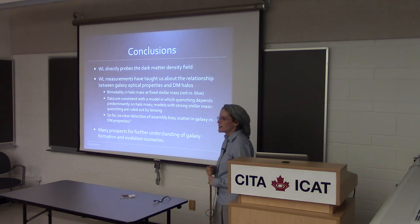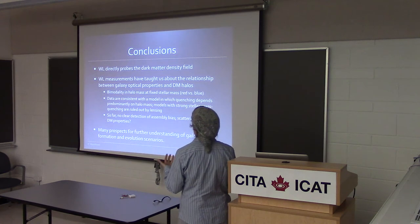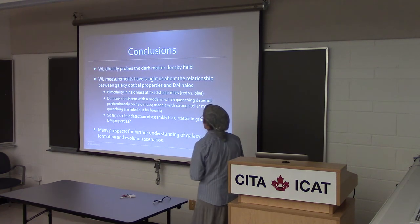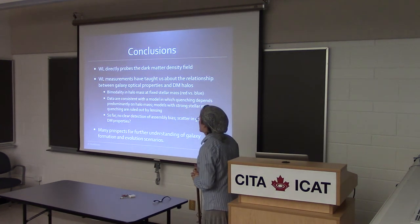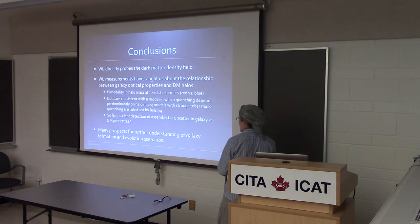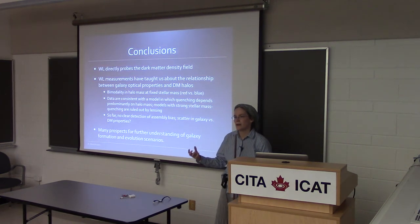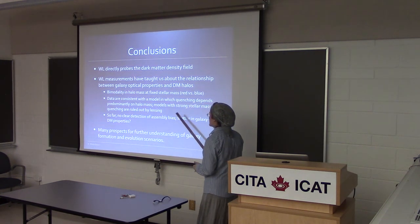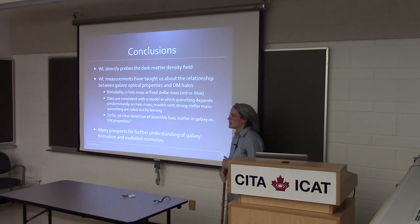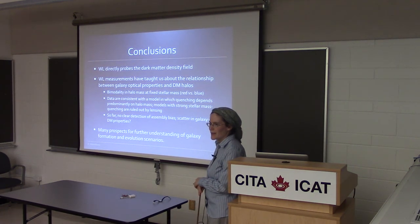To conclude: weak lensing can now be used with existing and upcoming surveys to learn about the detailed relationship between galaxy optical properties and dark matter halos. We've learned about bimodality in halo mass at fixed stellar mass, and that galaxy quenching is predominantly controlled by something that correlates with halo mass. We failed to find assembly bias, which is kind of interesting. There are many prospects for further discovery in ongoing and upcoming data sets. Thank you.